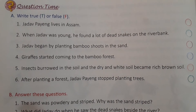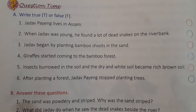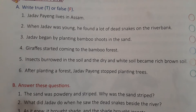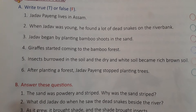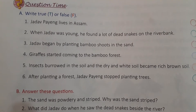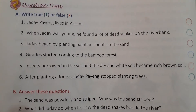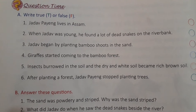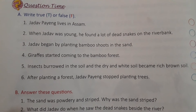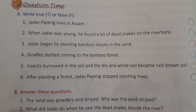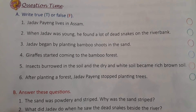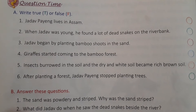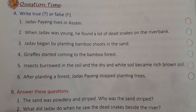First sentence — I am reading it, listen to me carefully. All of you, open your book, page number 18. आज हम पहली exercise करेंगे, Chapter 2: Jadav and the Tree Place. उसकी हम आज Exercise A करेंगे.